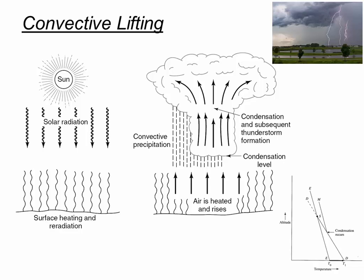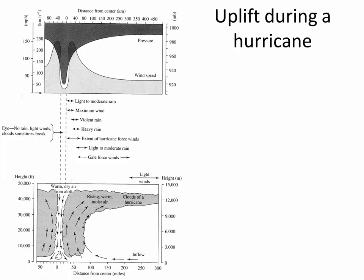So to summarize: frontal lifting, orography, and convective lifting are the three things that force warm moist air upward. Here's a cutaway showing conceptually what happens during a hurricane and why there's so much moisture during a storm event like that — not surprisingly, it's because of lifting.